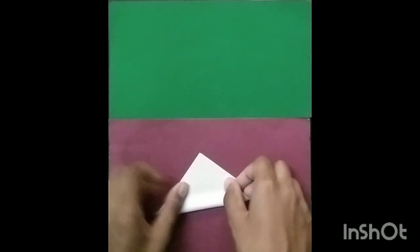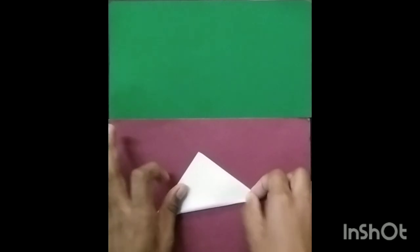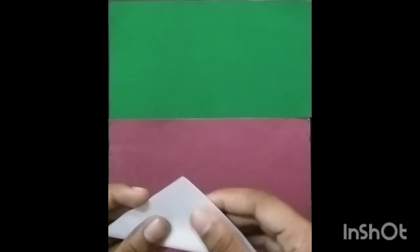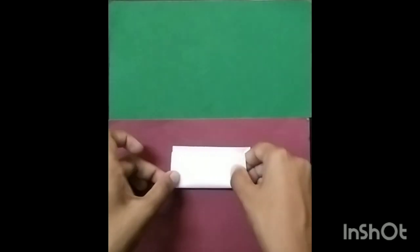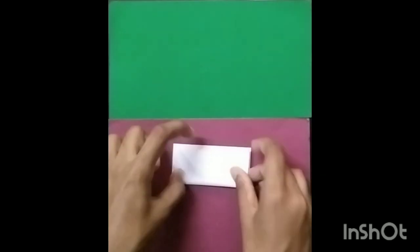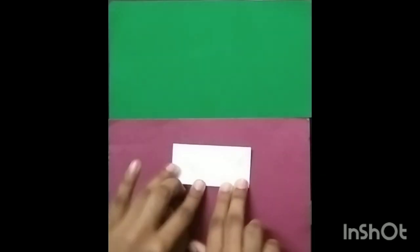So first you are going to fold it into a triangle. Perfect triangle. And now on the opposite side. Now you are going to open it and do a book fold. And now the book fold on the opposite side.